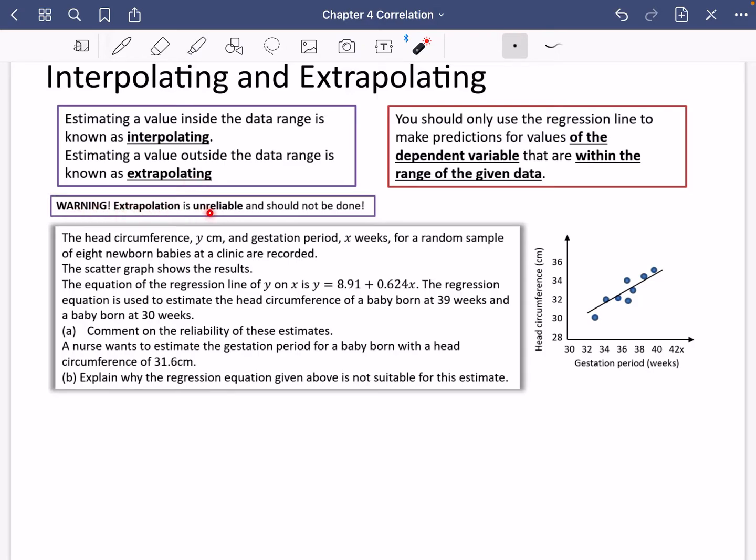Warning: extrapolation is unreliable and should not be done, whereas on the other hand, interpolating is reliable and usually should be done. The second thing here is that you should only use the regression line, the line of best fit, to make predictions for values of the dependent variable that are within the range of the given data.